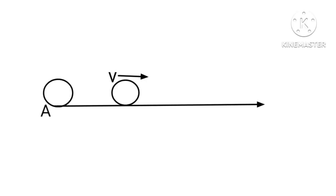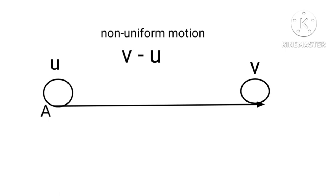Let a body is moving with uniform motion from A to B along a straight line. The velocity remains constant. Hence change in velocity during this interval is zero. However, in non-uniform motion, the change in velocity of the object during any time interval is not zero.